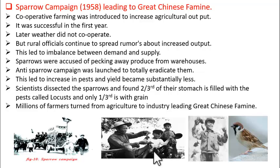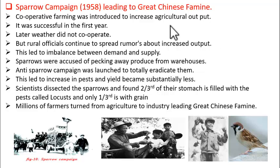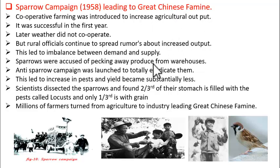For this brutal killing, the government even awarded the people with non-material gifts — such a cruel campaign it was. This campaign finally led to a further decrease in agricultural output and led to the Great Chinese Famine. People started suffering hunger after this campaign. The government then ordered scientists to find out the reason for the famine.